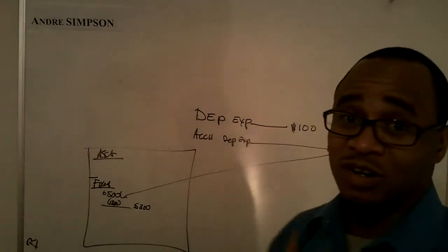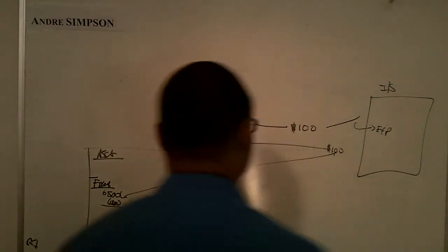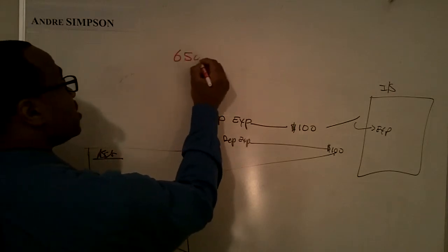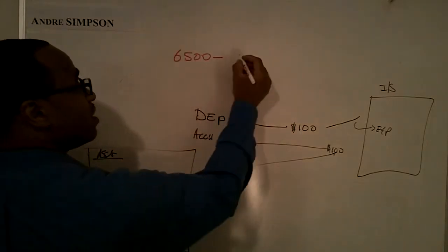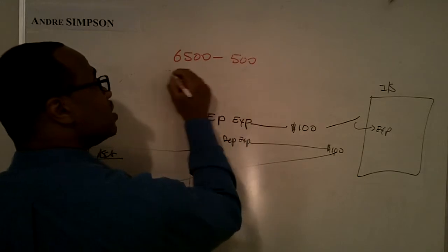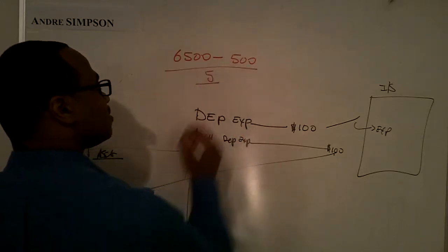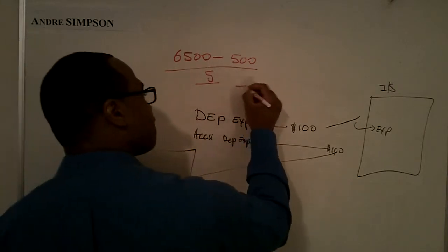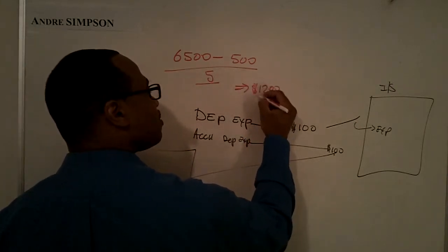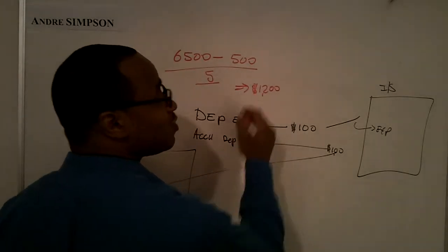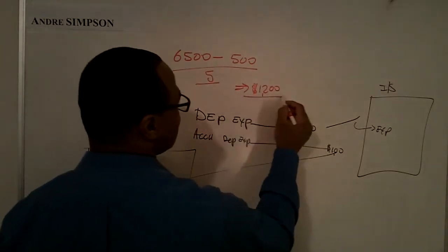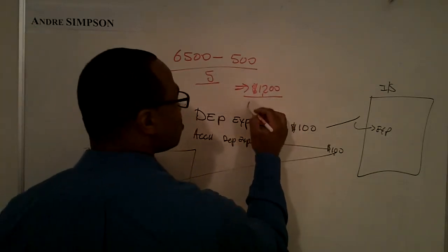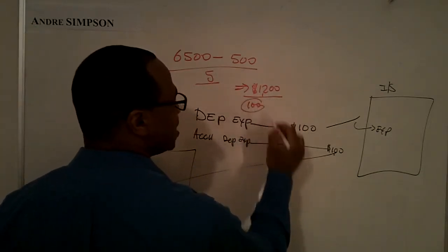I'm going to put the numbers up top here real fast for you. This is the recap. Remember, we paid $6,500 for it. The salvage value was $500, and the useful life was five years. We calculated that $1,200 per year is the depreciation of the vehicle, and $100 per month is the depreciation expense.